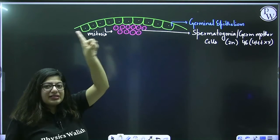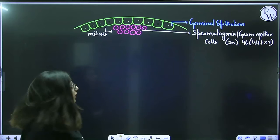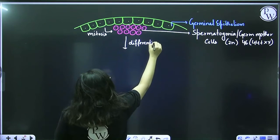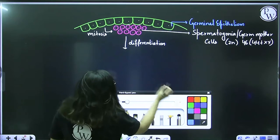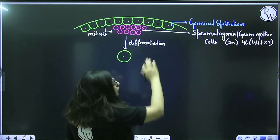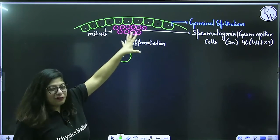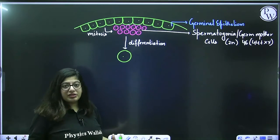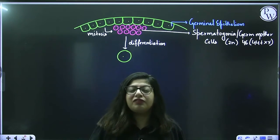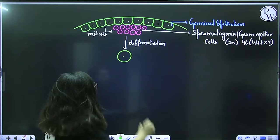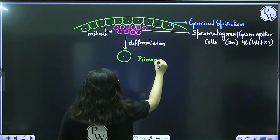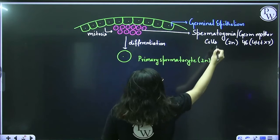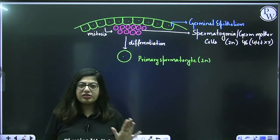Out of many spermatogonia, one cell will be selected every time and will undergo differentiation — a type of maturation. That cell will become bigger in size, acquire a lot of cytoplasm, and become the primary spermatocyte. Primary spermatocyte is also diploid, just like spermatogonia — it has 46 chromosomes because no meiosis has taken place yet.